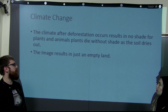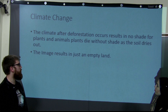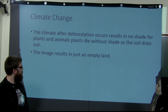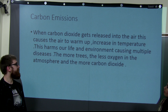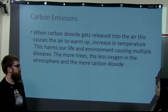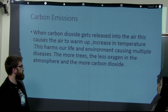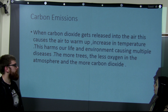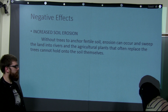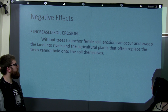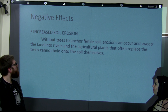After deforestation occurs, there is no shade for plants and animals. Plants would die without the shade, and the soil dries up, resulting in empty land. When carbon dioxide gets released into the air, it causes the air to warm up. The increase in temperature harms our life and environment, causing multiple diseases. Without trees, erosion can occur and sweep fertile soil into rivers, and the agricultural plants that often replace the trees cannot hold onto the soil by themselves.